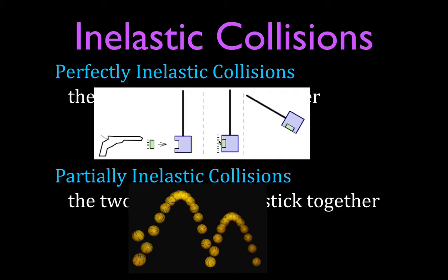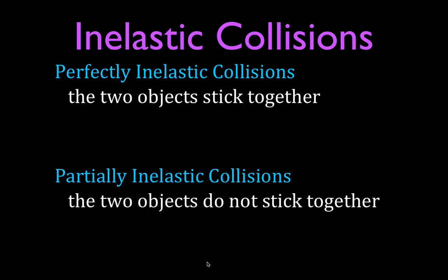For a collision that is partially inelastic, think of a basketball bouncing off the ground. It doesn't bounce back up to the same height because some of the kinetic energy of the ball is lost when it strikes the floor — it goes into deforming the shape of the ball or vibrating the molecules in the floor. But the two objects do not stick together.